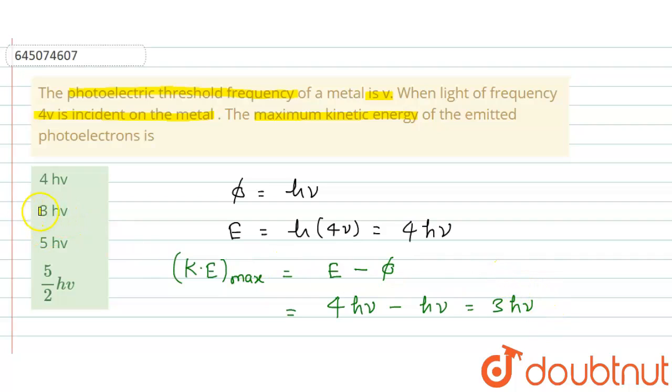So correct option is option B, 3Hµ. I hope you have understood the explanation. Thank you.